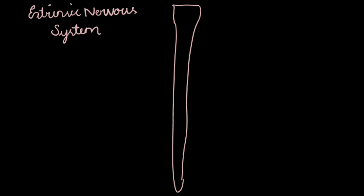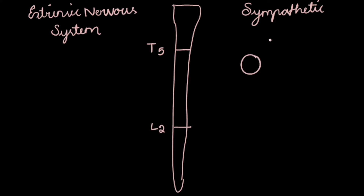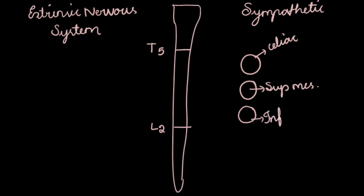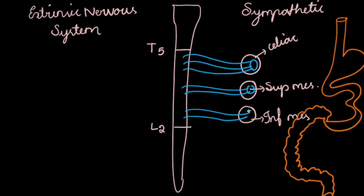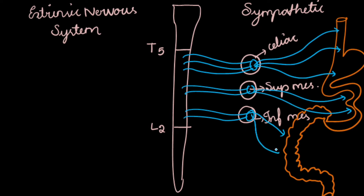Now let's discuss the extrinsic nervous system — sympathetic and parasympathetic. The preganglionic nerve fibers arise from the lateral horn of the thoracic segment T5 and extend up to L2. These preganglionic sympathetic nerve fibers pass via the ganglia: celiac, superior mesenteric, and inferior mesenteric. The celiac ganglion is mainly concerned with the stomach and duodenum, superior mesenteric with the small intestine, and inferior mesenteric with the large intestine.